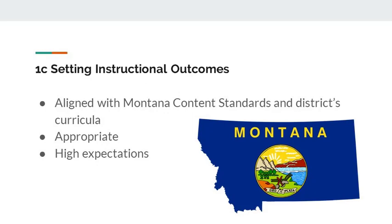To meet 1C, setting instructional outcomes, the teacher selects instructional goals that are aligned with the Montana content and Common Core standards and the district's curricula. The goals are appropriate for the learners and reflect high expectations for all students, and are also consistent with state and district assessment levels of performance.